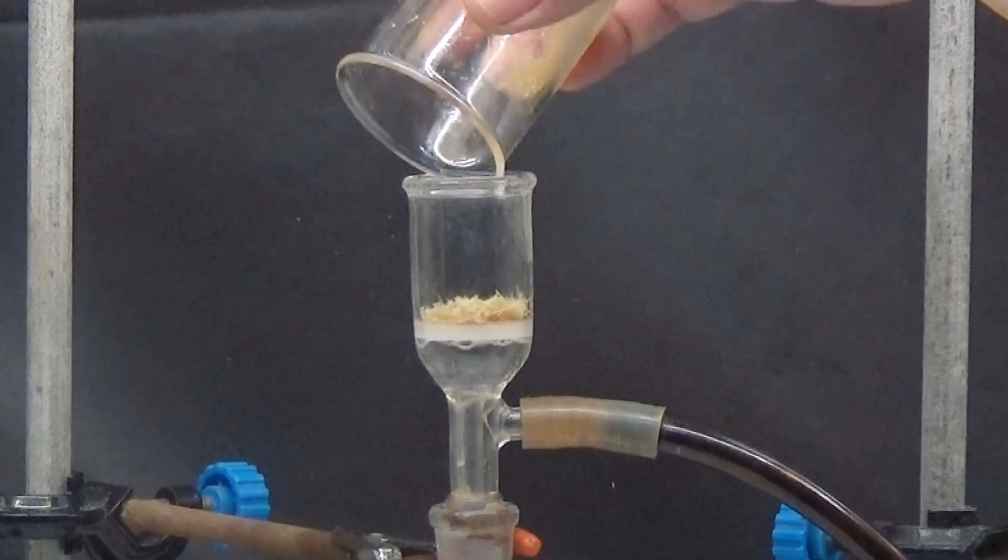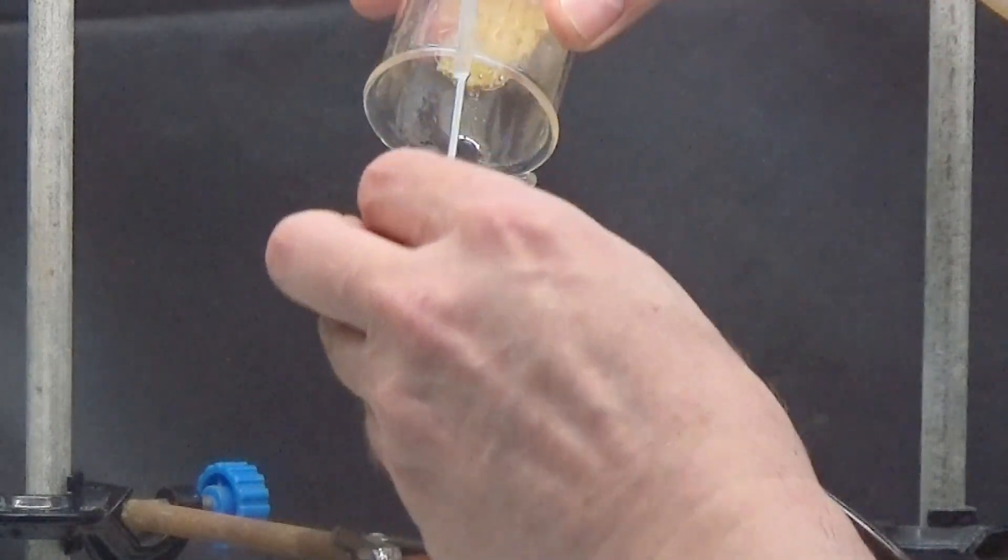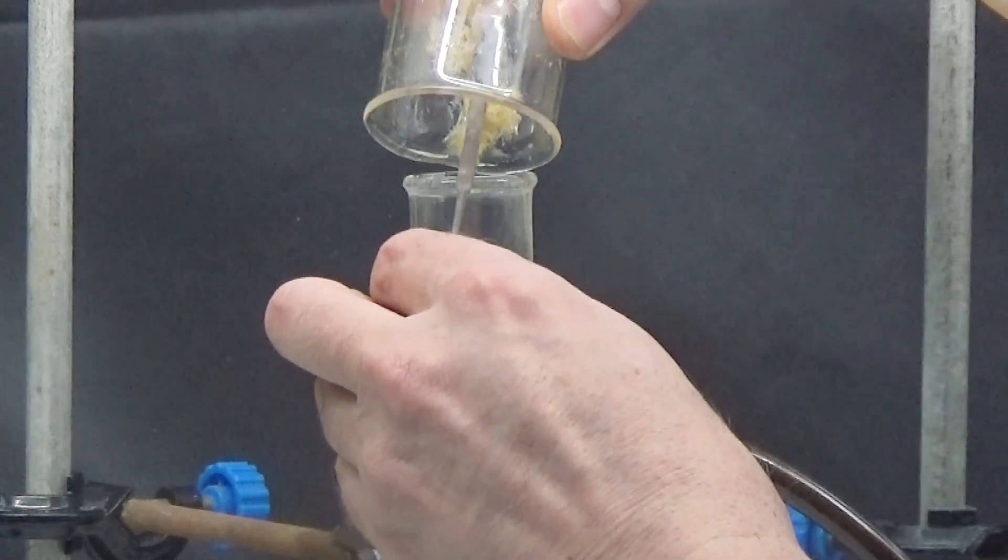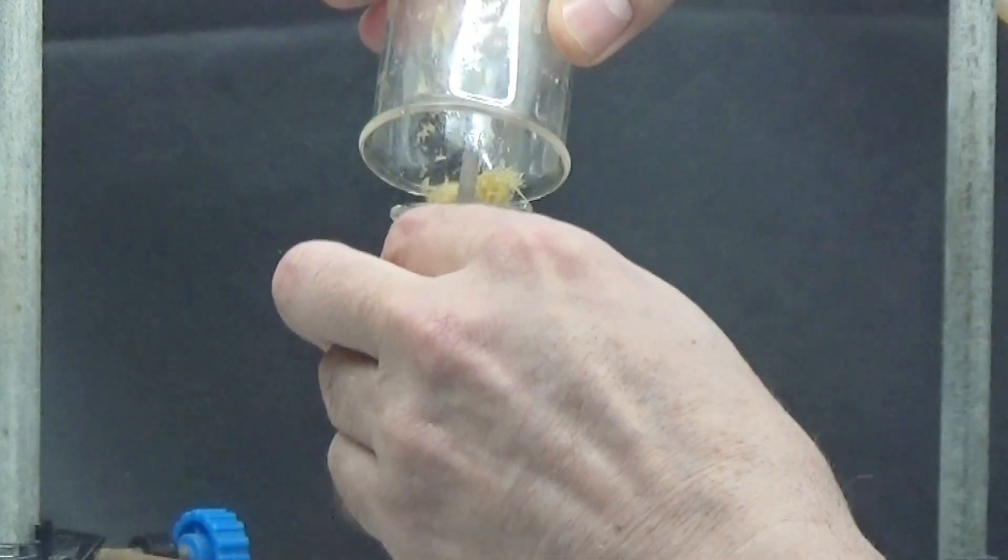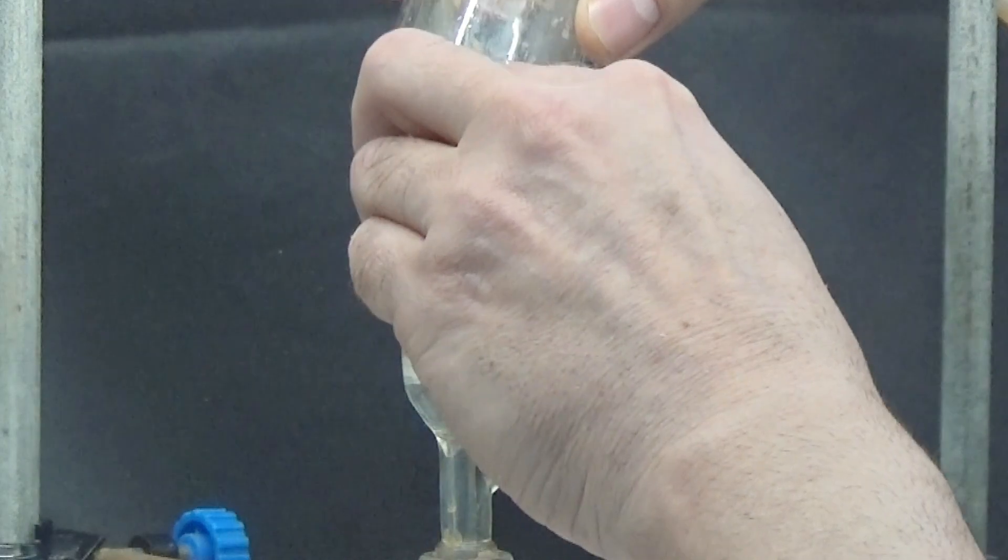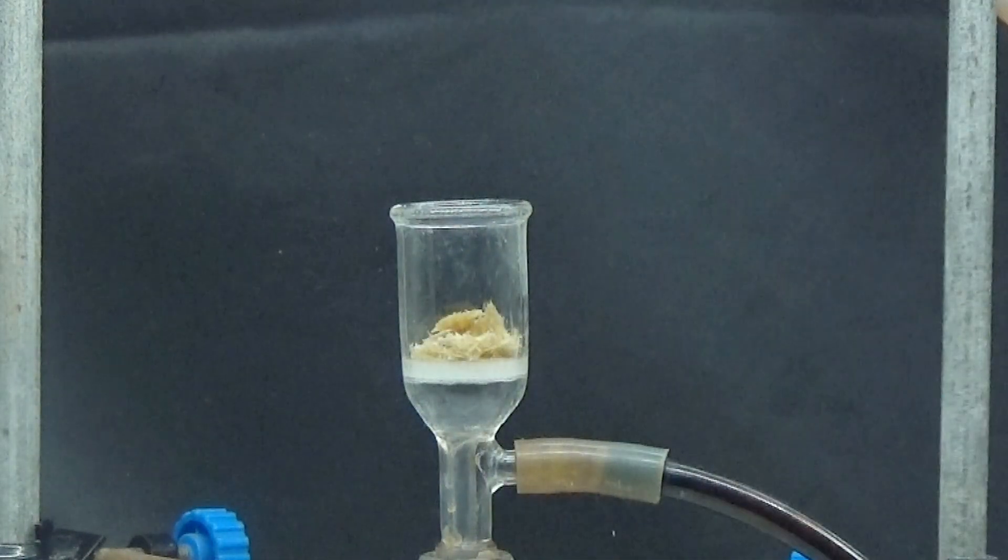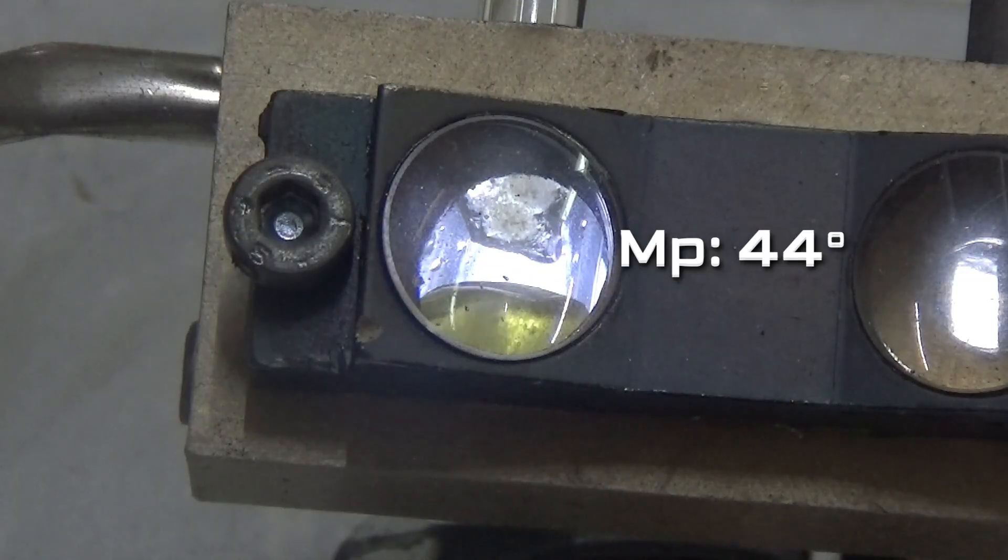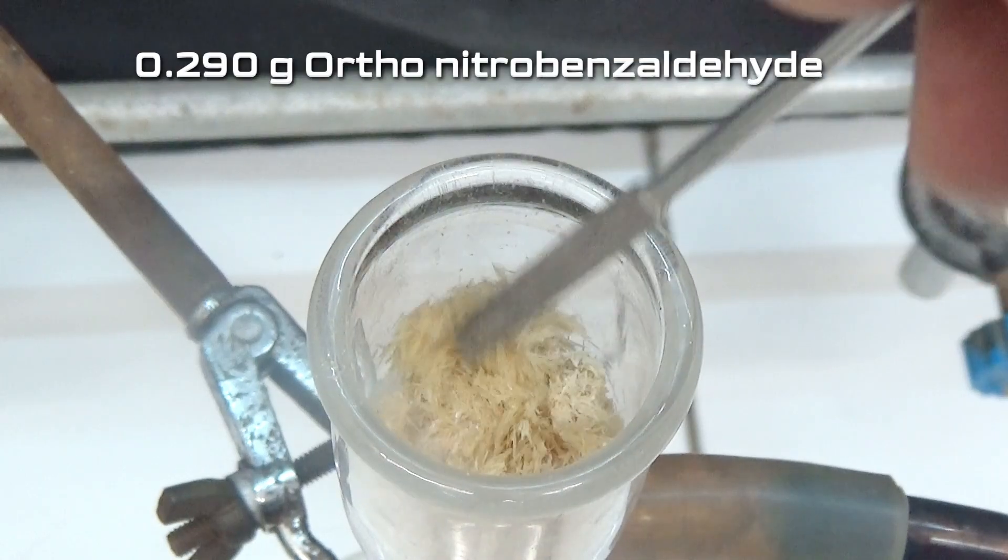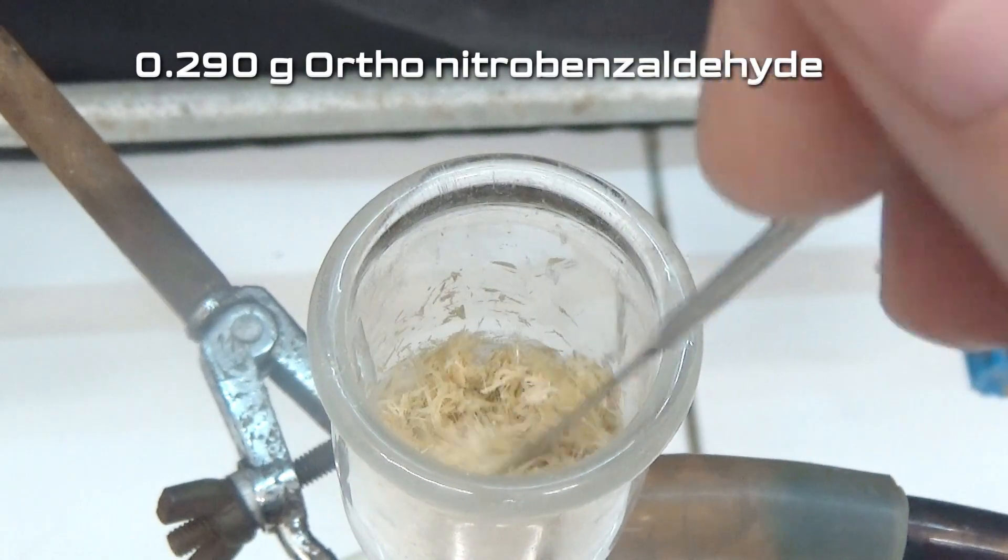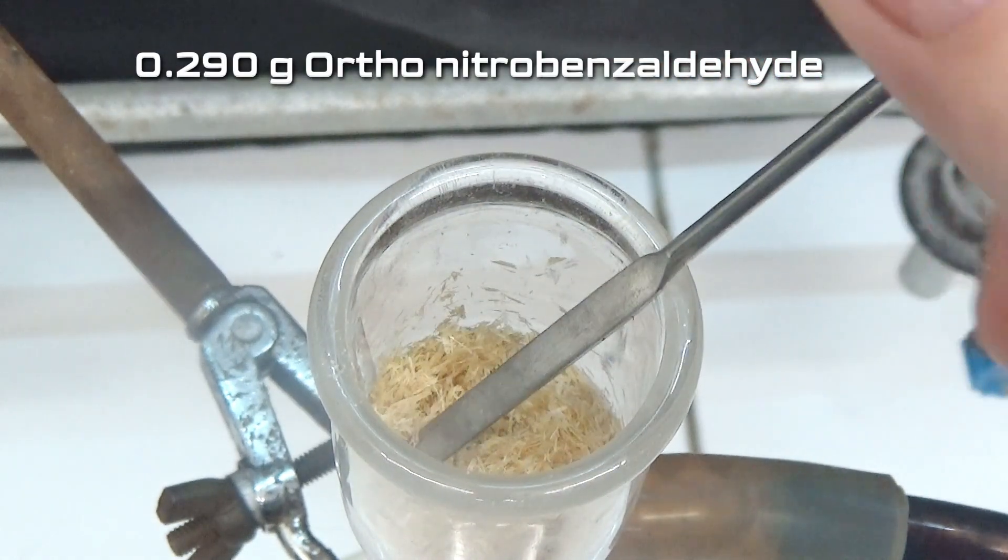Yellow needle shaped crystals were obtained and collected by suction. Wash with a little cold hexane. The product has to melt at 44 degrees. In this operation 0.290g of ortho-nitrobenzaldehyde have been obtained.